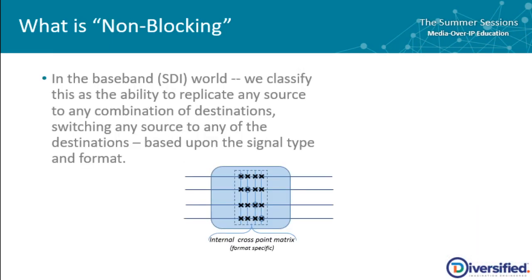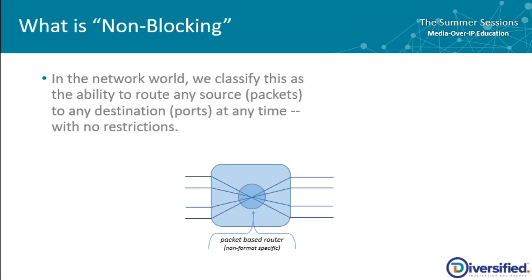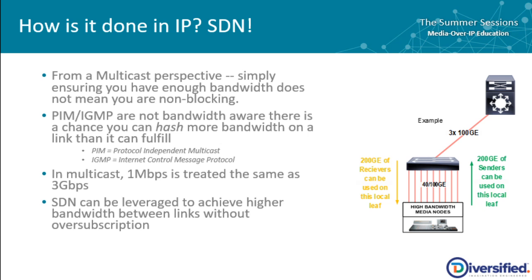One term mentioned earlier was non-blocking. In the broadcast industry, most of us know this as the ability to replicate any source to any combination of destinations — switching any source to any of the destinations based upon signal type and format. In the IP world, this gets infinitely more complex. We classify it as the ability to route any source or packet to any destination port at any time with no restrictions. From a multicast perspective, simply ensuring you have enough bandwidth does not mean that you are non-blocking.